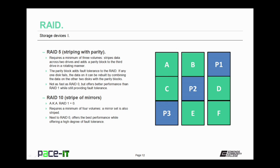In an effort to improve RAID performance, RAID 5 was developed, also called striping with parity. RAID 5 requires a minimum of at least three drives. In a three-volume setup, it stripes data across two drives and adds a parity block to the third drive in a rotating manner. The parity block adds fault tolerance — if any one disk fails, the data can be rebuilt by combining the data on the other two disks with the remaining parity blocks. RAID 5 is not as fast as RAID 0 but offers better performance than RAID 1 while still providing fault tolerance.